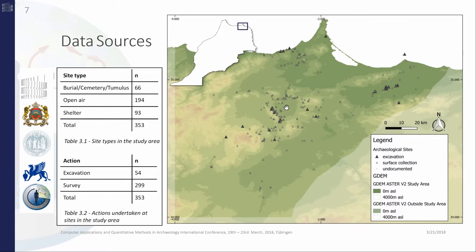Our CRC 806 was working with the German Archaeological Institute and the Institute of Archaeology and Cultural Heritage Sciences of Morocco for 20 years surveying and excavating a small region in northeastern Morocco. These projects from 1995 to 2015 culminated in the discovery of about 350 archaeological sites, of which 54 could be excavated. They're all represented here in this map.